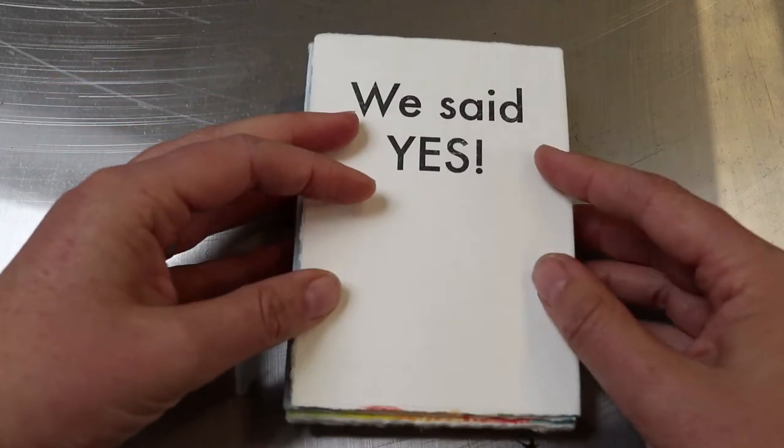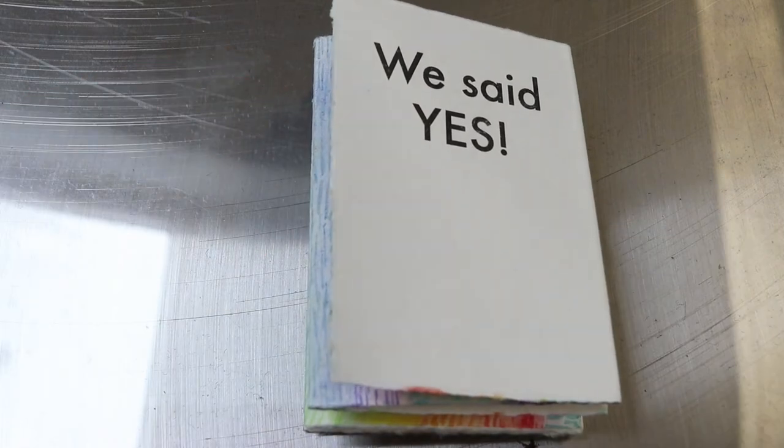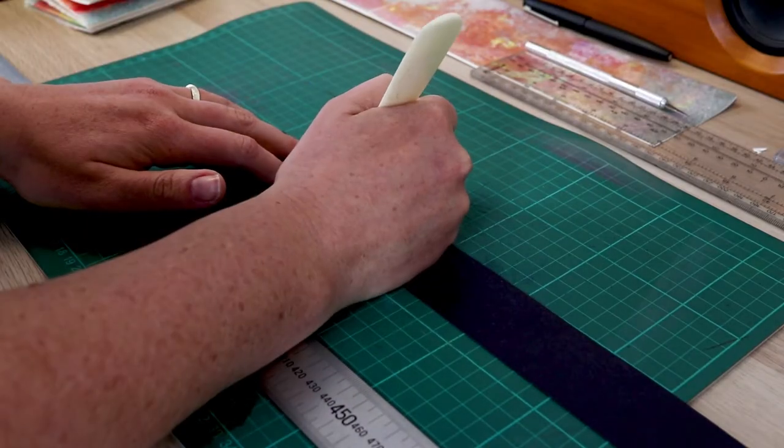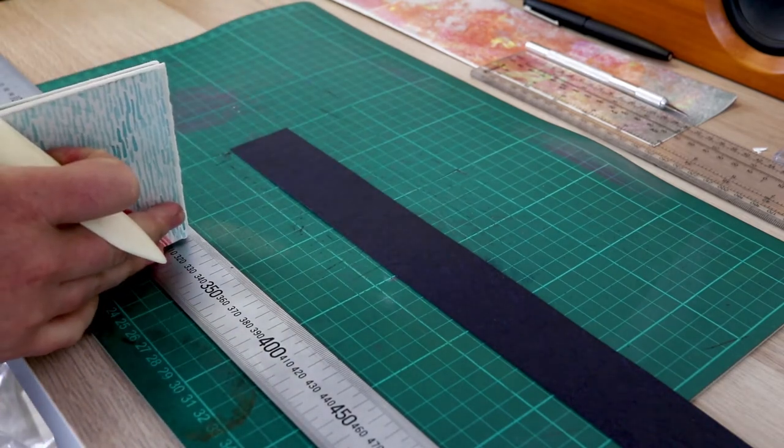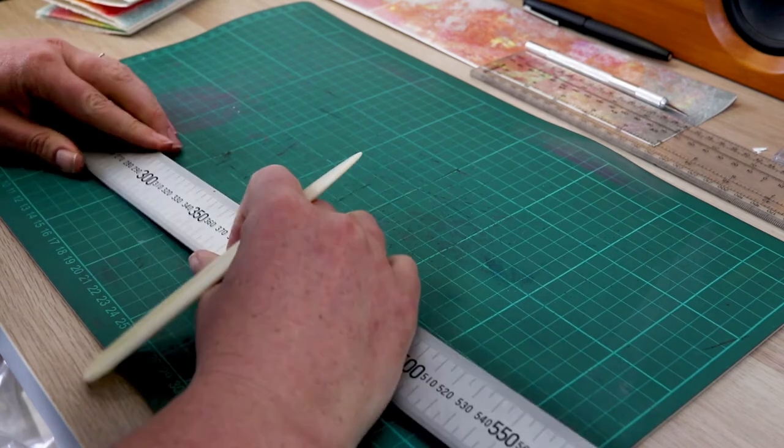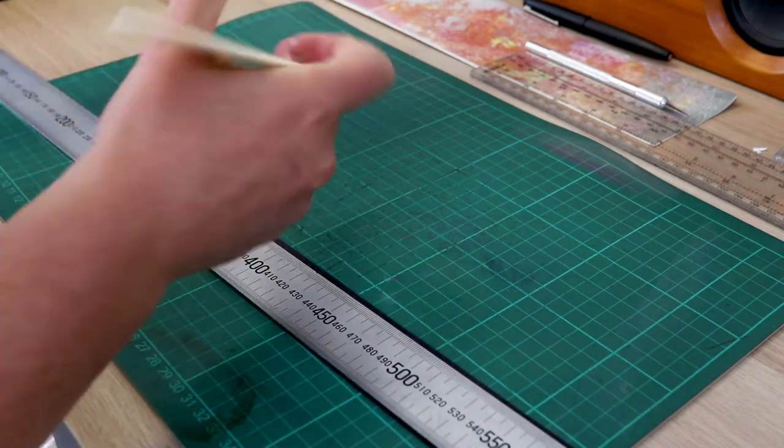When you're done with the main part of the invitation, it's time to make a simple band that will hold it together and allow you space to write the recipient's name. Start with a strip of paper in a complementary color and measure out where you'll need to fold so the band wraps comfortably around the belly of the booklet. I like to score these fold marks with the pointed end of the bone folder.